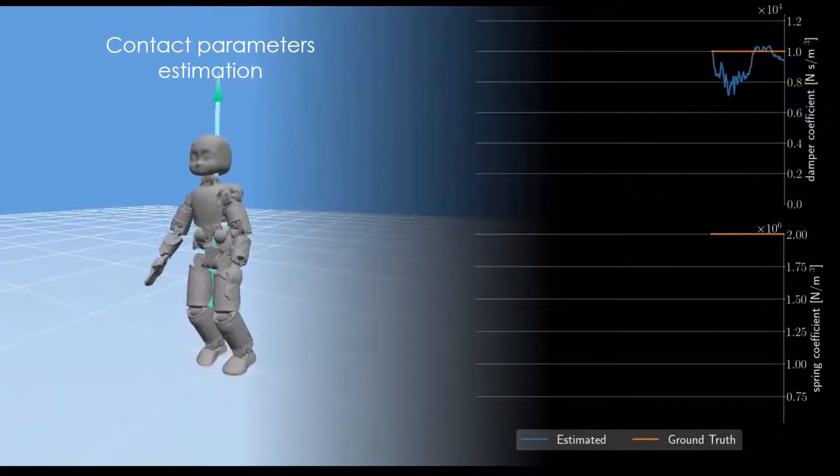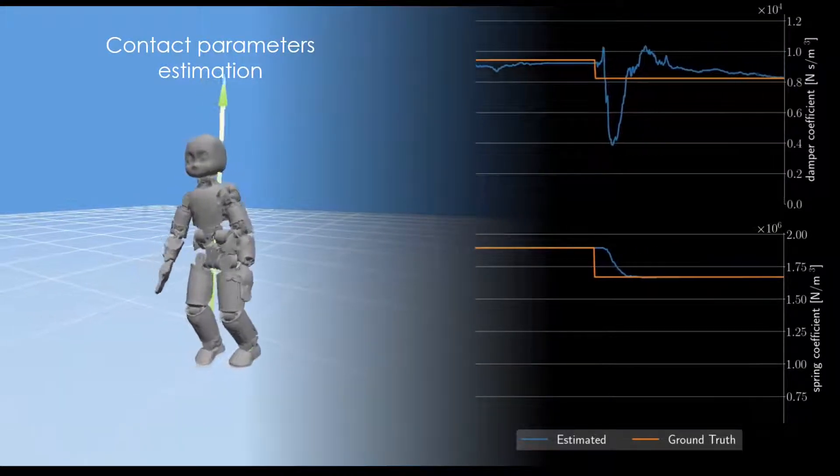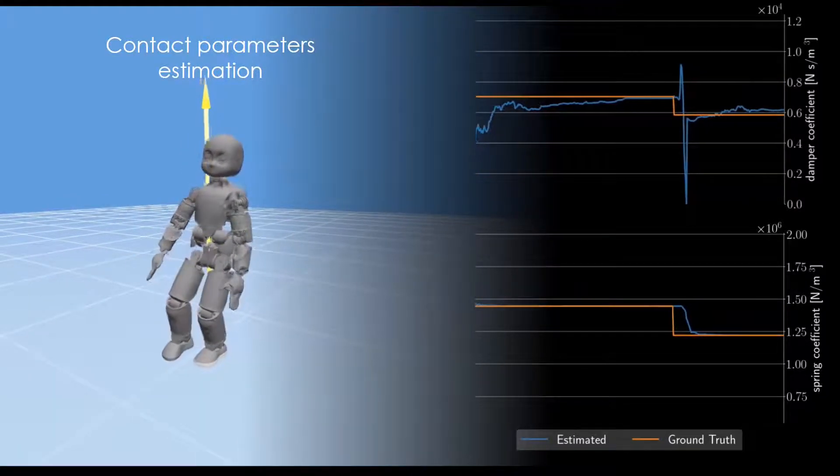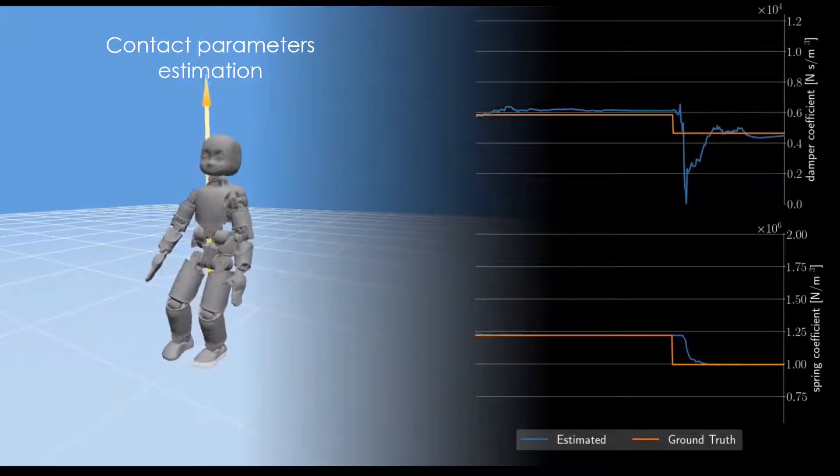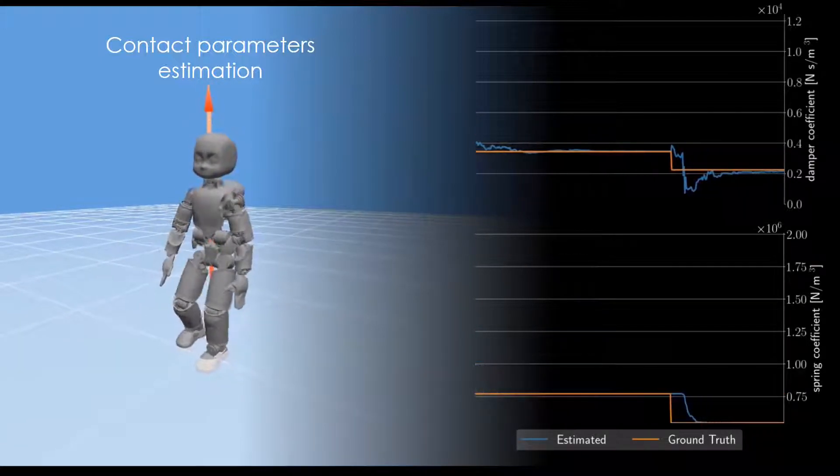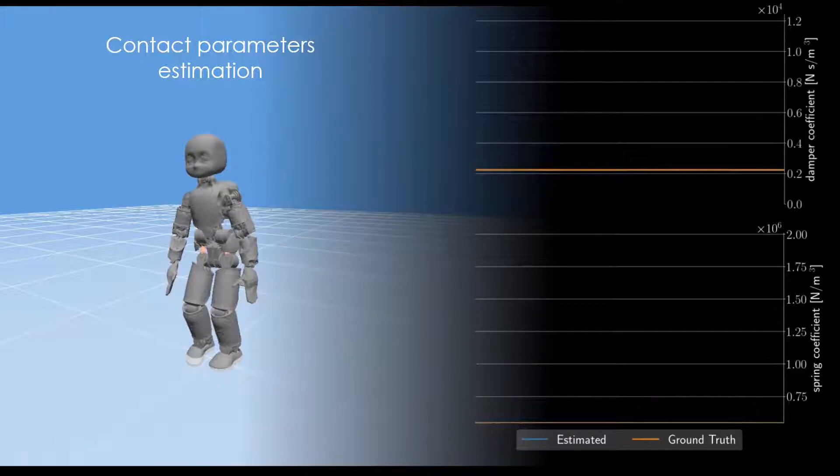We finally analyzed the contact parameters estimator performances in the case of an anisotropic environment. We modeled the contact parameters as a piecewise function of the forward walking direction, assuming that all points of the contact surface have the same contact parameters. To cope with the contact parameters discontinuities, we reset the state covariance in the recursive least square algorithm each time a foot impacts the ground. The observed parameters converge to the ground truth in less than a second. The experiment shows that during the transient phases, the controller achieves good overall performances.